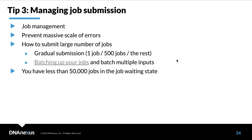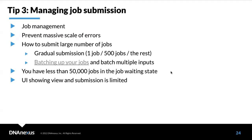Another tip for managing job submissions: keep fewer than 50K jobs in the waiting state on the platform. There may also be some limitations in the UI — when you go to the monitor page, you can monitor jobs, show running jobs, and show folders on the project, but some of these UI features may be limited when you work with really large-scale data.